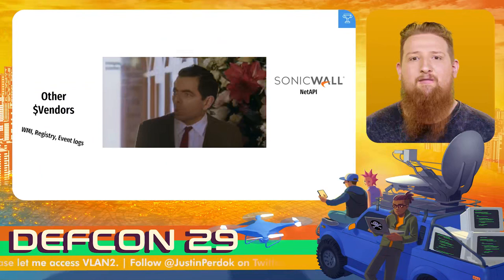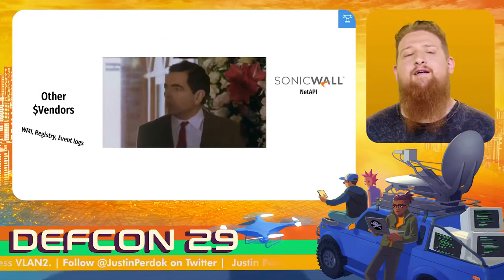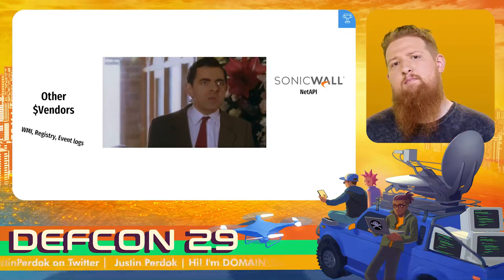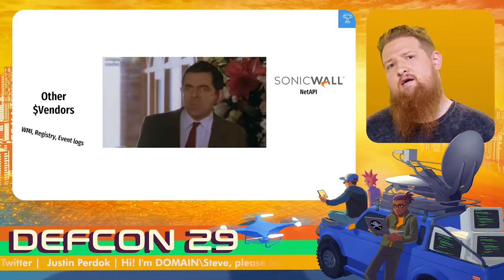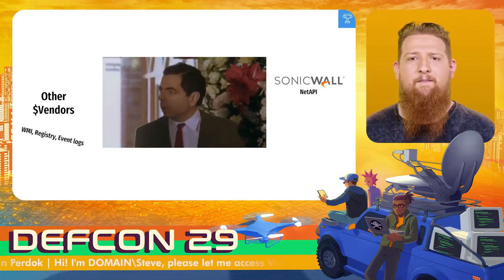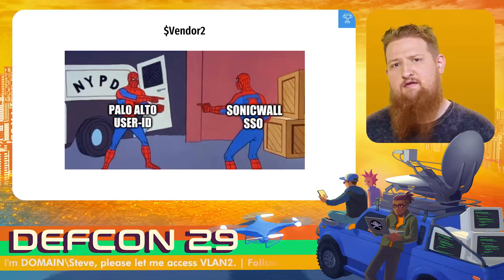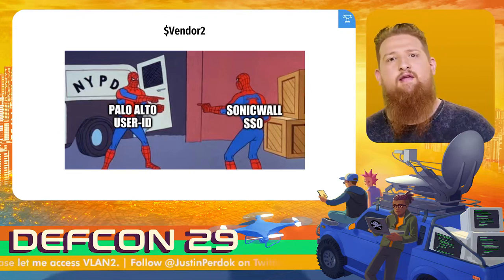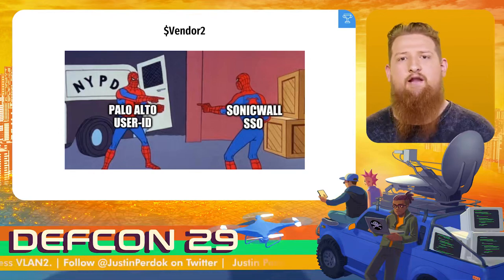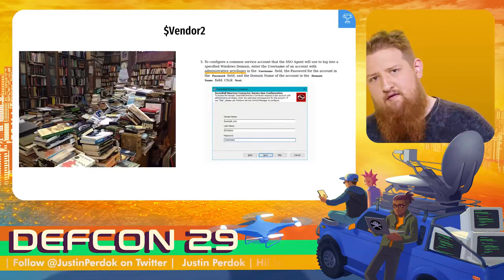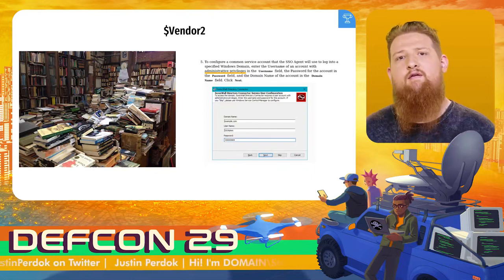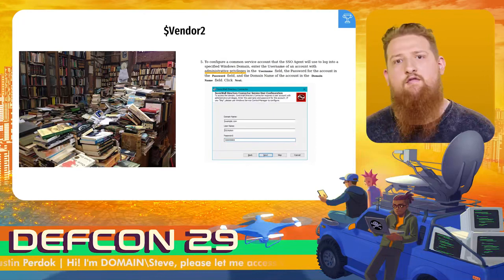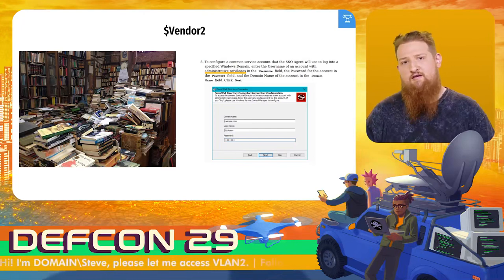After pwning one firewall vendor, I started looking around because there might be more out there. Googling around, I found that most firewall vendors have some form of user-to-IP mapping, but not all use SMB as their probing method. I found one called SonicWall that referenced something called NetAPI. NetAPI is SonicWall's SSO solution — basically the same as Palo Alto User-ID, configured as an agent installed somewhere in the network collecting information from Active Directory or client probing. The main difference is that SonicWall's documentation is scattered — depending on which doc you open, you're either told to use least privileges or just use administrative rights.